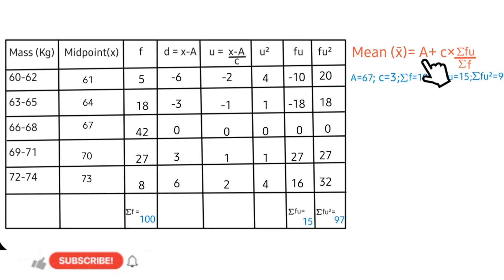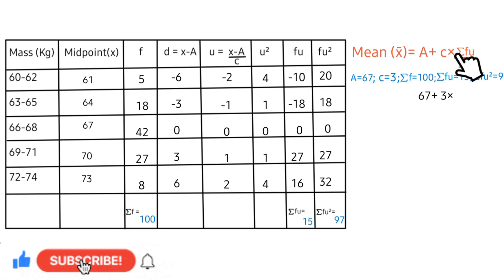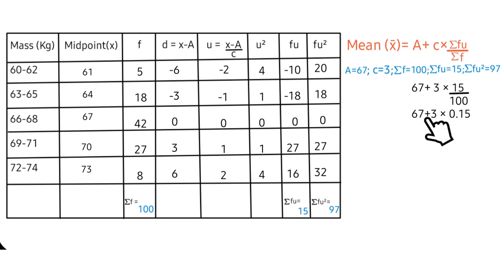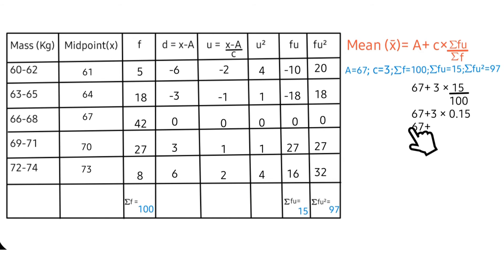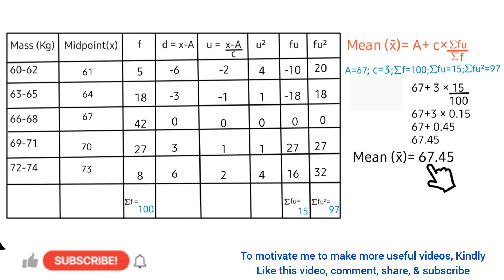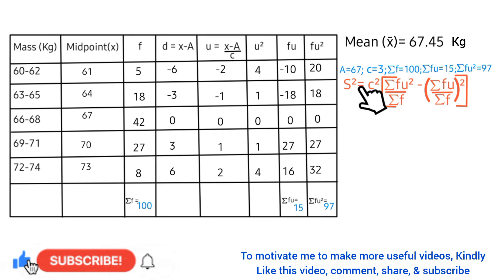Now let's calculate the mean. The formula is: mean = a + c × (summation fu / summation f). We have 67 plus 3 times (15 divided by 100), which gives 67 plus 3 times 0.15, then 67 plus 0.45. So the mean of the distribution is 67.45 kg.